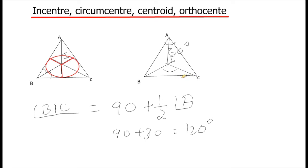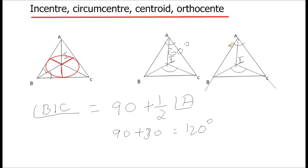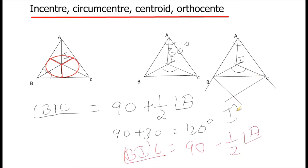Apart from this, if we extend sides AB and AC and draw angular bisectors for the external angle, these angular bisectors will intersect at some other point I'. Angle BI'C is 90 minus half of angle A. If angle A is 60 degrees, this angle will be 90 minus 30, which is 60 degrees. This is how you can solve problems related to in-center questions.